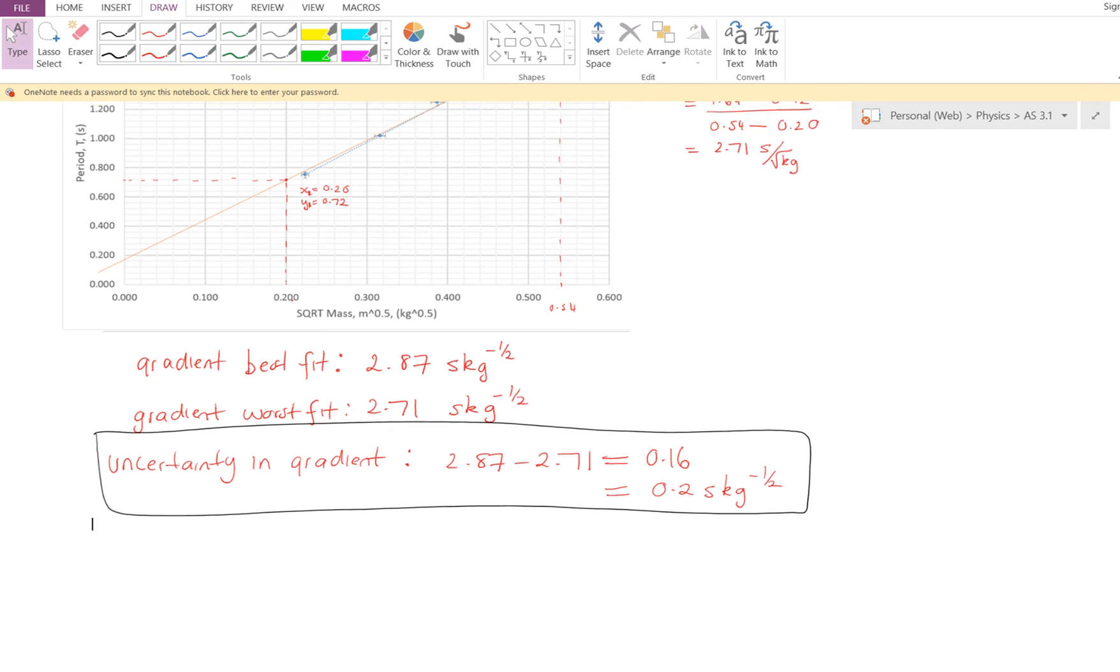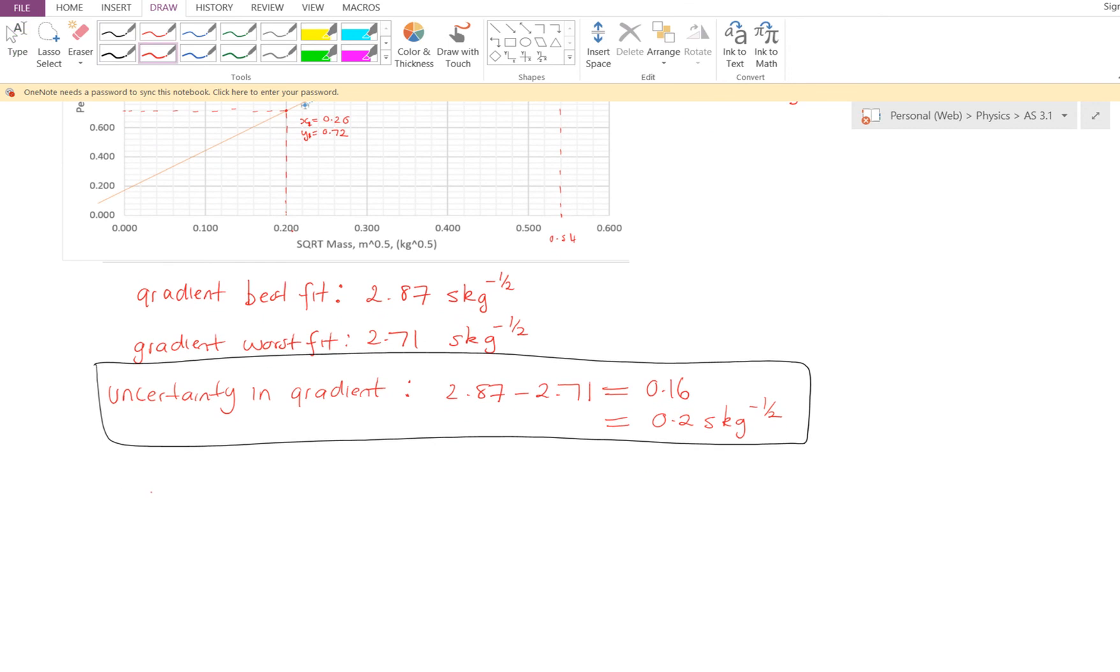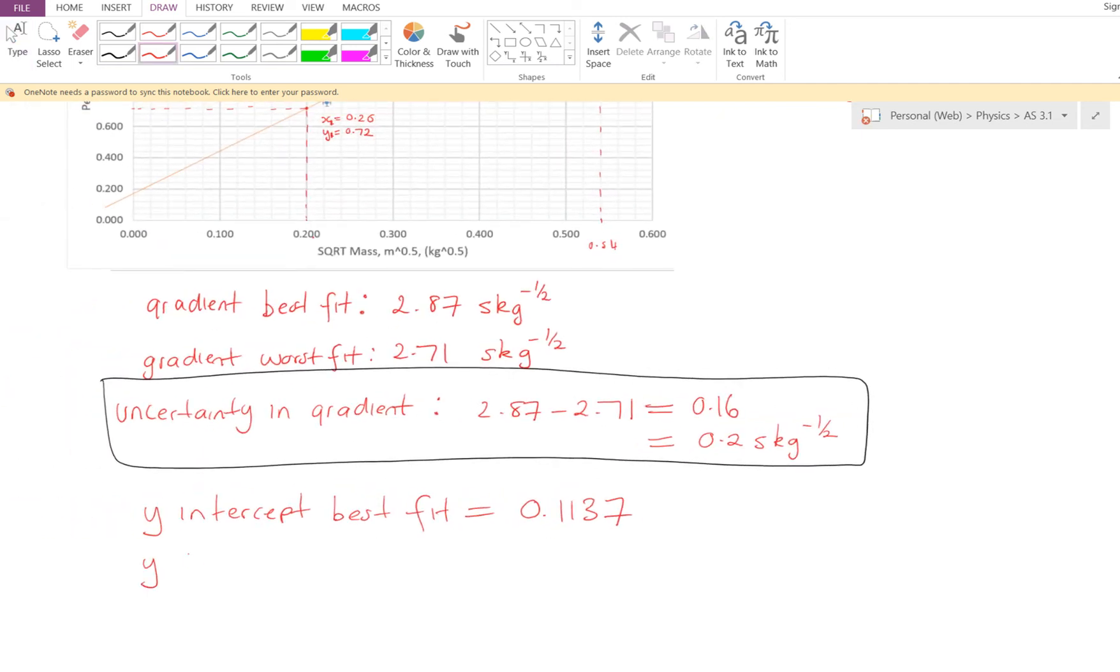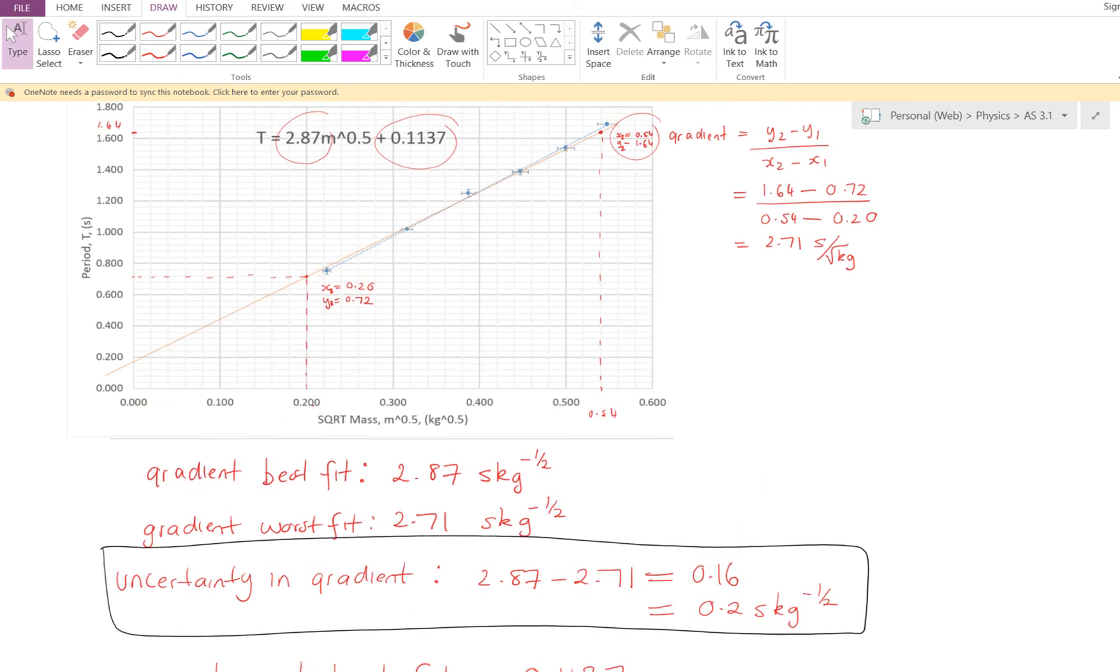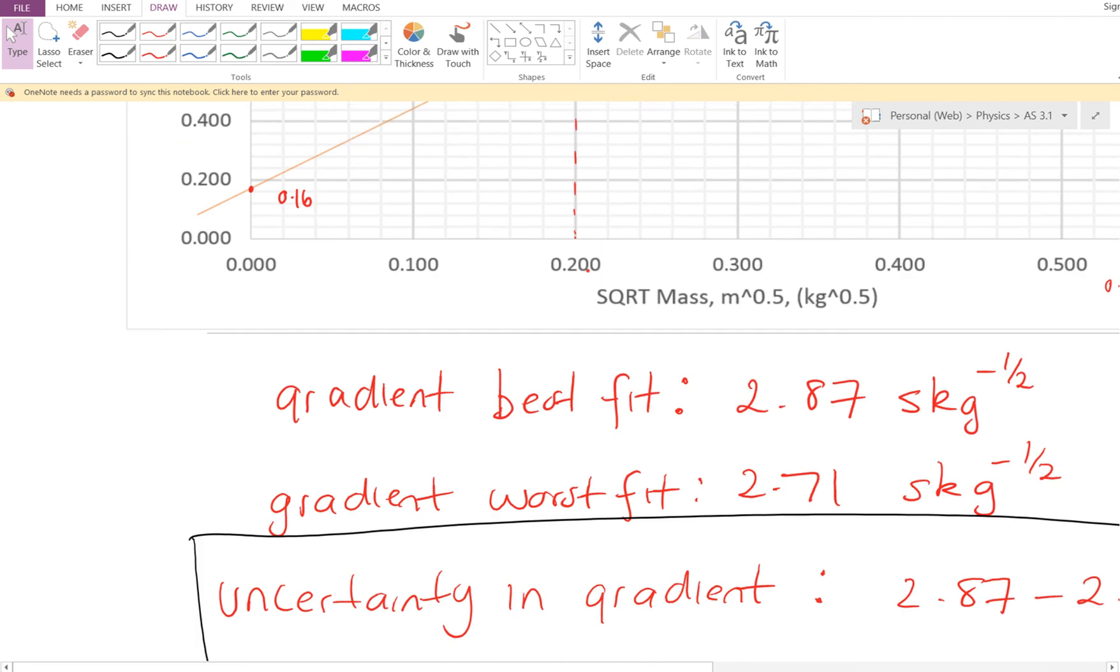Next step, our y-intercept also has an uncertainty. So at the moment, based on our equation, we have a y-intercept of 0.1137. So y-intercept for the best fit is equal to 0.1137. And we've got a y-intercept for our worst fit as well, which is, looking at that, roughly 0.16. So 0.16.